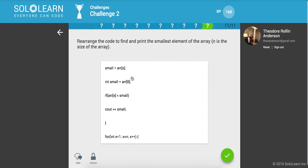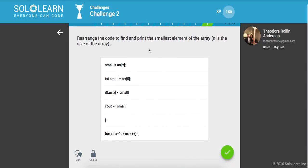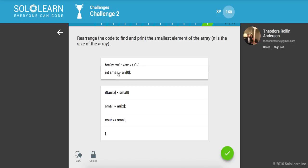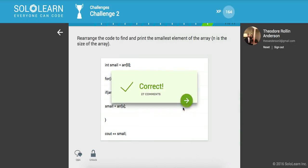And finally rearrange the code to find and print the smallest element in the array. So we want the minimum. And so here we can declare a for loop and we can say int small is going to be equal to array of zero. And then actually, let's see, probably want this before a for loop. And otherwise, count small. Let me make sure. All right. Cool.